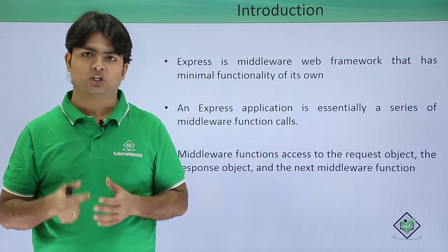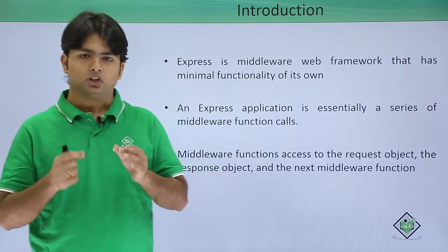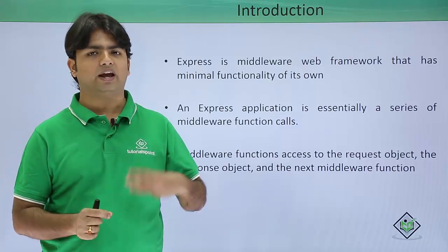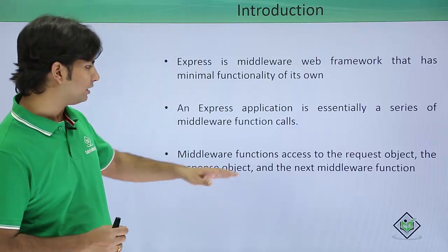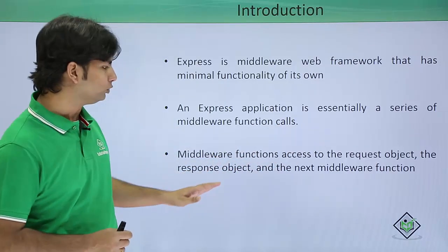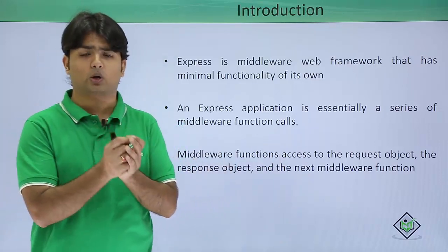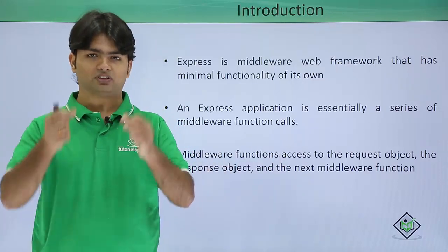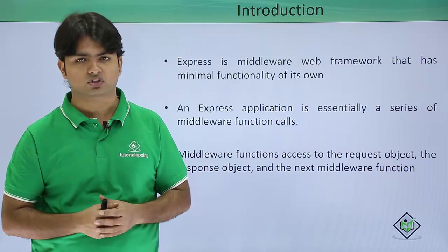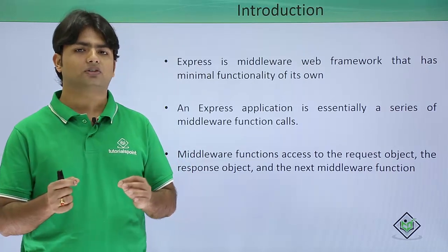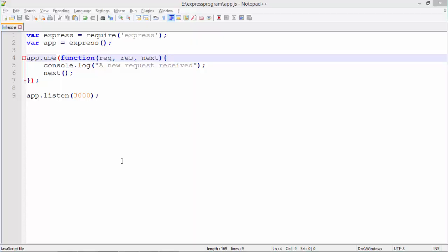Whenever you define a function for middleware, it takes three arguments: the request object, the response object, and the next pointer, which points to the next function in the middleware series. Let's see practically how middleware needs to be implemented.